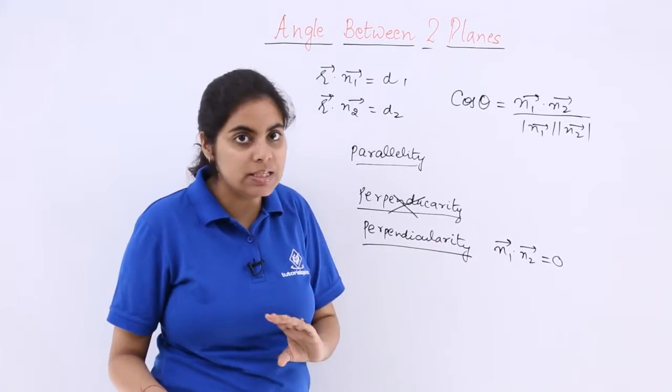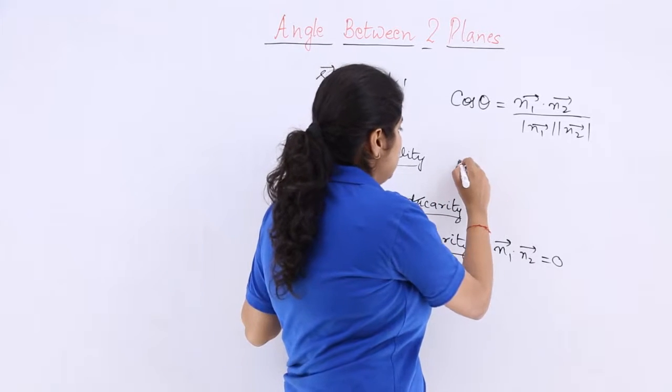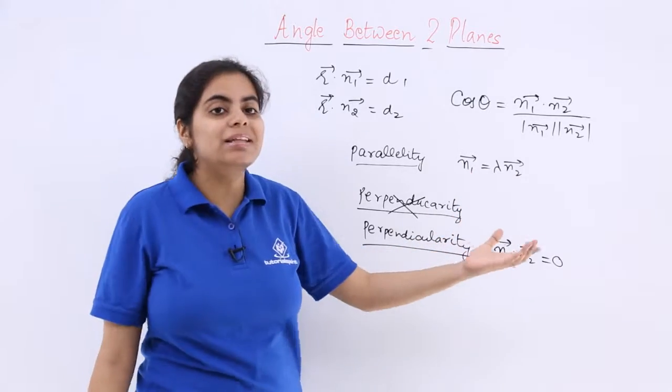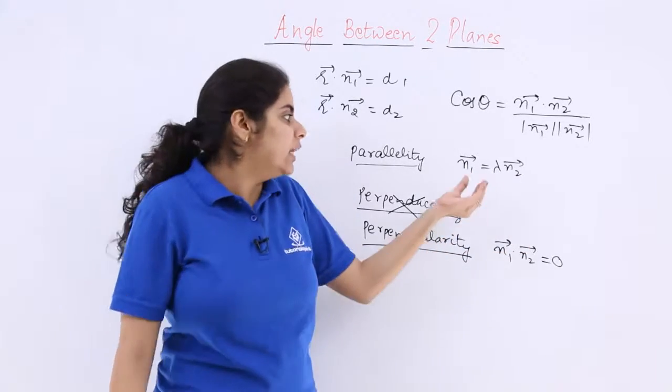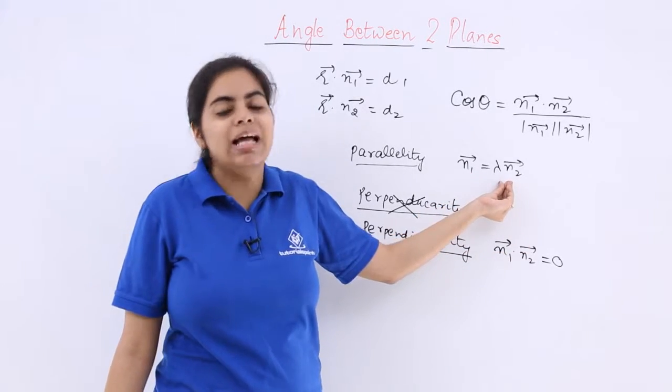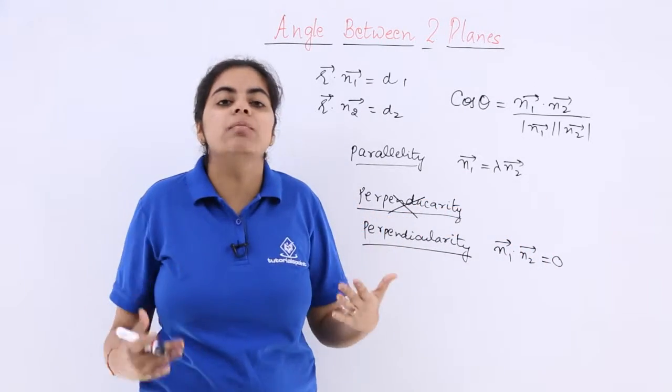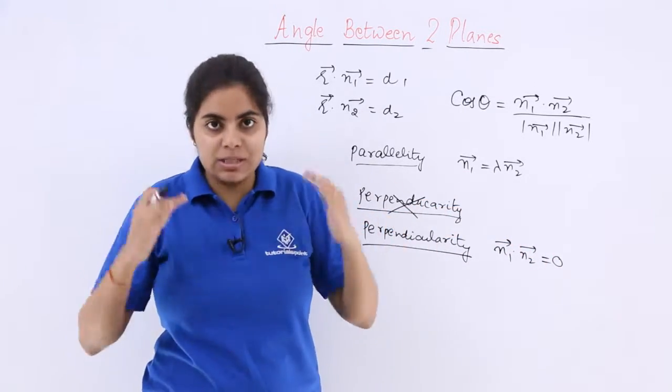So perpendicularity condition is this. And what about the parallelity? So for parallelity, I have to introduce a scalar and that will make the things very obvious and clear that n1 should be lambda times n2 because either they can be equal or they can be having different magnitudes in proportionality.